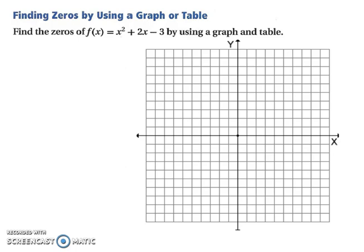Let's start by finding zeros by using a graph or a table. So for this one, we're going to do a graph and a table so you can see both. We have x squared plus 2x minus 3. So from our previous section, we learned that we can graph by finding our vertex and our y-intercept. So let's start with our vertex.